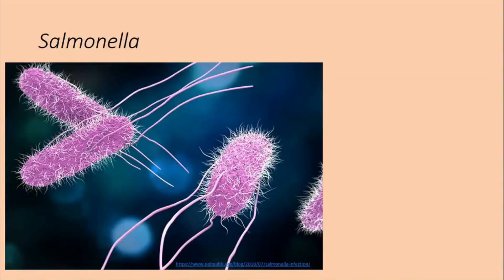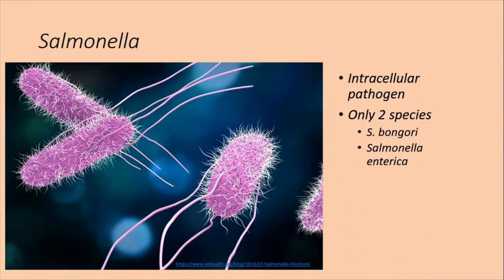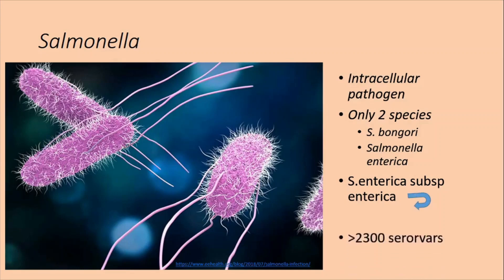This Salmonella organism has mainly two species: Salmonella bongori and Salmonella enterica. Salmonella enterica is the most important. Salmonella enterica subspecies enterica is mostly pathogenic for humans and animals. Most of the species come under the subspecies enterica. And even this subspecies enterica has more than 2,300 serovars.